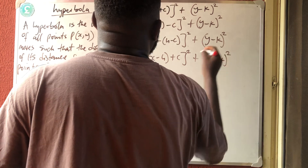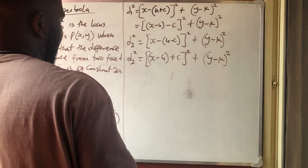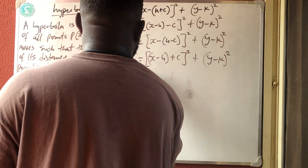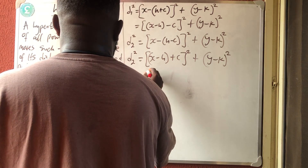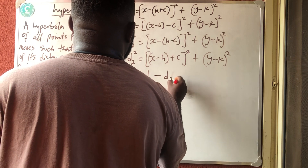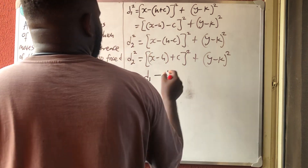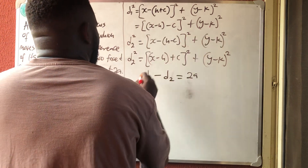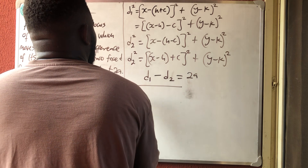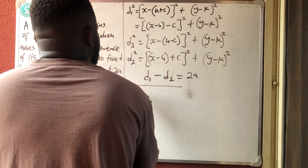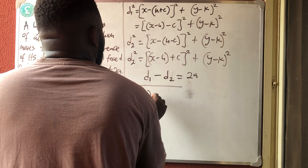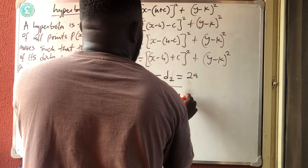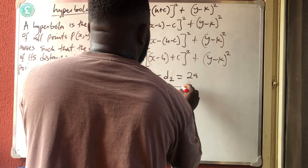Since this is a hyperbola, the difference between D1 and D2 equals 2A. So D1 minus D2 equals 2A. D1 is the square root of (X − H − C)² + (Y − K)², minus the square root of (X − H + C)² + (Y − K)², equals 2A.